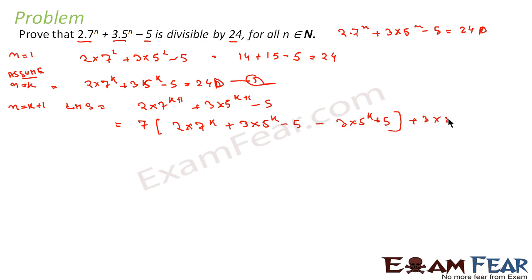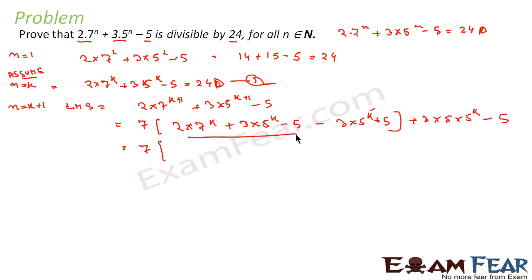We convert terms into 5 to the power k form. So we have 5 to the power k here. What we get is 7 into the bracketed expression, which becomes 24d by our assumption.